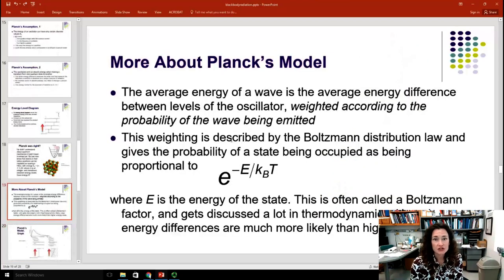Now, the average energy of a wave is the average energy difference between the levels of the oscillator, but you also have to weight it, according to the probability that that wave is going to be emitted. And it's this weighting factor that helps to give the characteristic peak that you see in the intensity of black body radiators. This weighting is described by the Boltzmann distribution law.